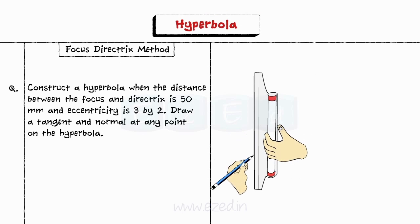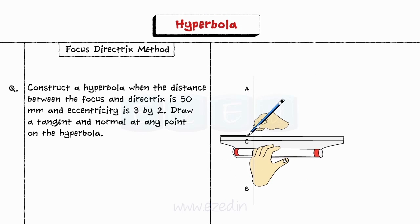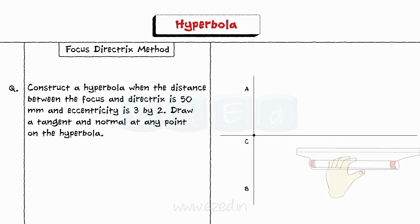Step 1. Draw a vertical line AB and from point C draw a horizontal line. Step 2. Mark point F 50 mm from point C and divide CF in 5 equal parts.